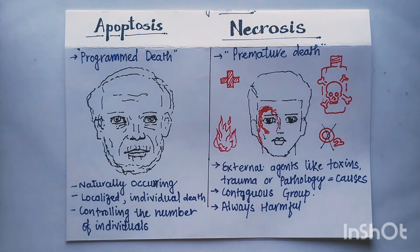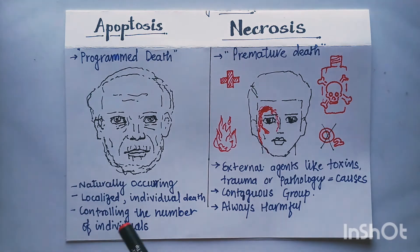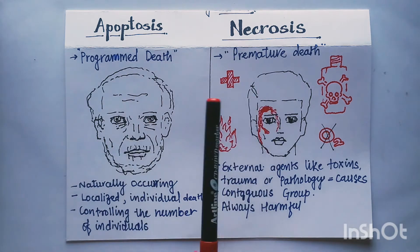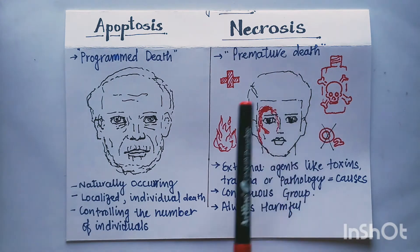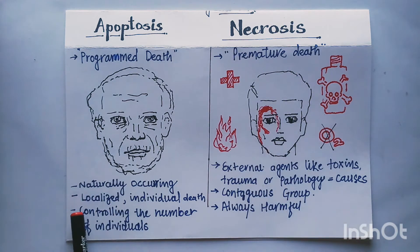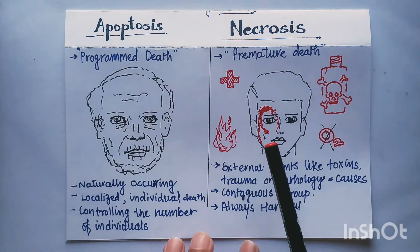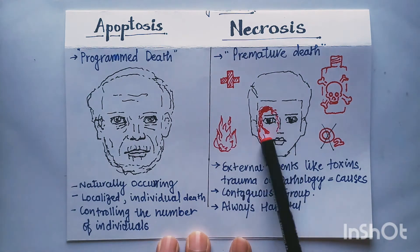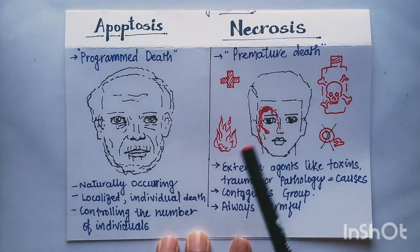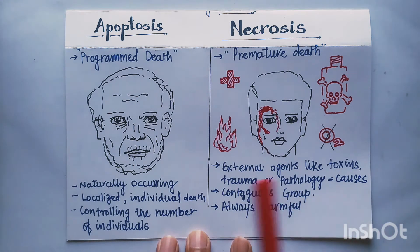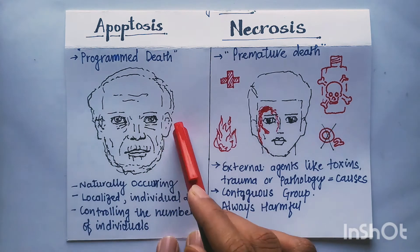So apoptosis is a kind of programmed cell death, whereas necrosis is premature death. Apoptosis is naturally occurring, and necrosis is due to external agents like toxins, thermal, mechanical, or electrical injuries. It can be due to any trauma, pathology, or pathogens.